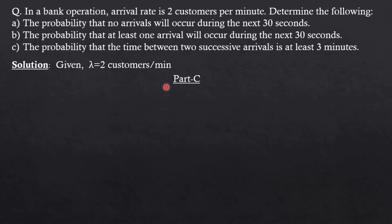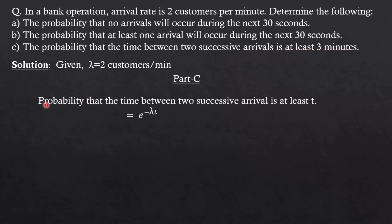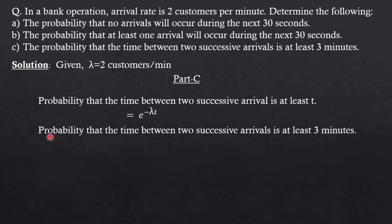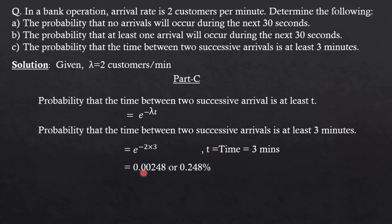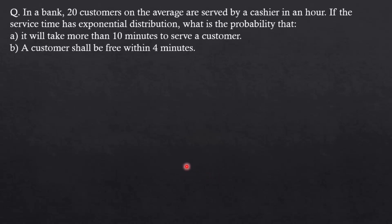Part C asks for the probability that the time between two successive arrivals is at least 3 minutes. Using the formula e to the power minus lambda t, with lambda equal to 2 and t equal to 3 minutes, the result is e to the power minus 6, which equals 0.00248, or 0.248%.